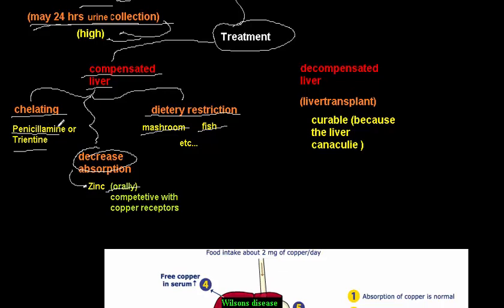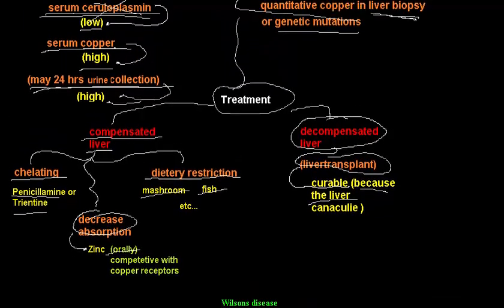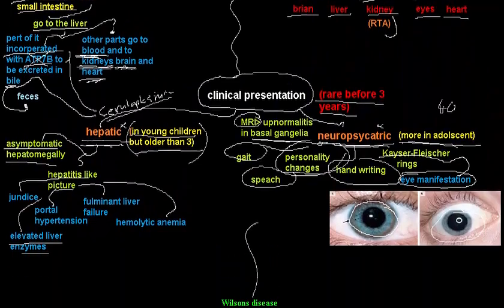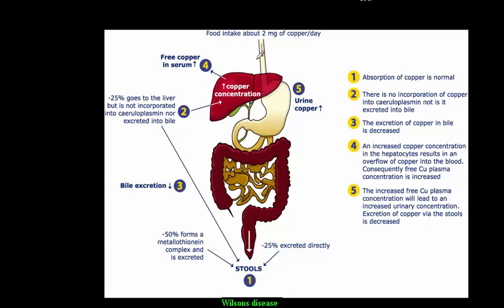In decompensated liver disease — cirrhosis or chronic liver failure — liver transplantation is performed. Wilson disease is actually curable with liver transplantation, and most cases have no recurrence, because the defect lies in the liver's canaliculi that cannot excrete copper. After transplantation, this function is restored.